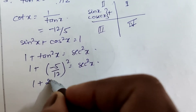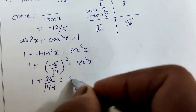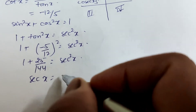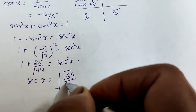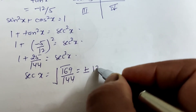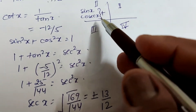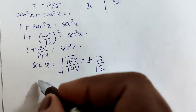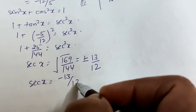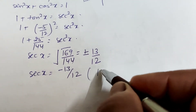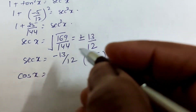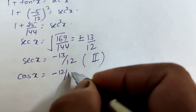So sec²x = 1 + 25/144 = 169/144, giving sec x = ±13/12. Since x lies in the second quadrant, sec x = -13/12. Then cos x = reciprocal of sec x = -12/13.